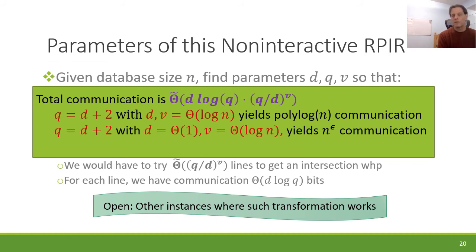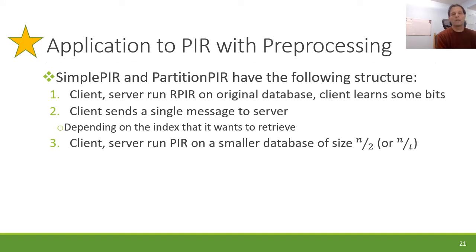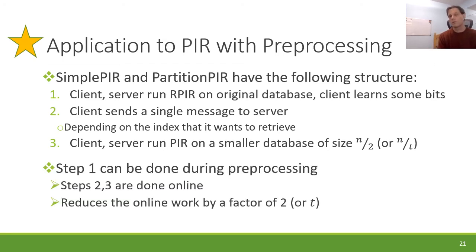An open problem is to find other instances where this transformation works. Regarding PIR with preprocessing: the simple PIR and partition PIR protocols have the following structure — the client and server run an RPIR protocol on the original database in preprocessing, then once the client knows its desired index it sends a single message to the server, and then they run a PIR protocol on a smaller database of size n/2 or n/T. Step one can be done during preprocessing, so steps two and three are done online with work reduced by a factor of two or T. This is a very lightweight form of preprocessing.